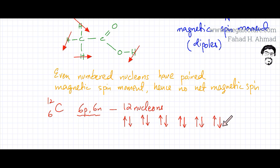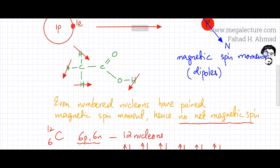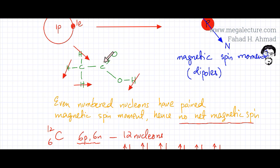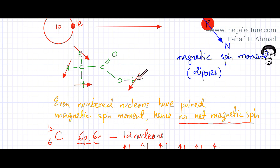That's why there's no net magnetic field for carbon or oxygen. Any atom with an even number of nucleons — oxygen has 16 nucleons, carbon has 12 — is not going to exhibit an overall magnetic field. Only the hydrogen atoms, because of their odd number of nucleons, have a magnetic field that is not cancelled out. They are the ones that act as tiny magnets.